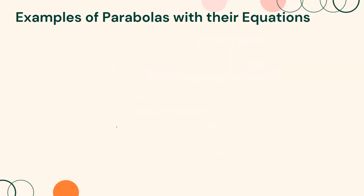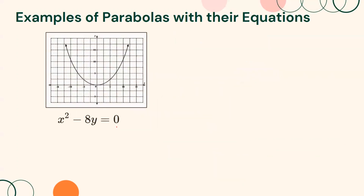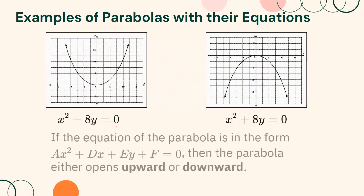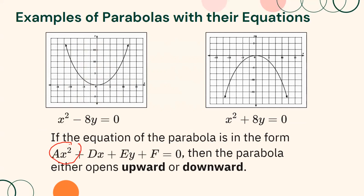Let us take a look at examples of equations of parabolas and their graphs. This is the graph of x² − 8y = 0, and this is the graph of x² + 8y = 0. If the equation of the parabola is in the form ax² + dx + ey + f = 0, then the parabola either opens upward or downward. Therefore, if the squared term is x, the parabola either opens upward or downward.